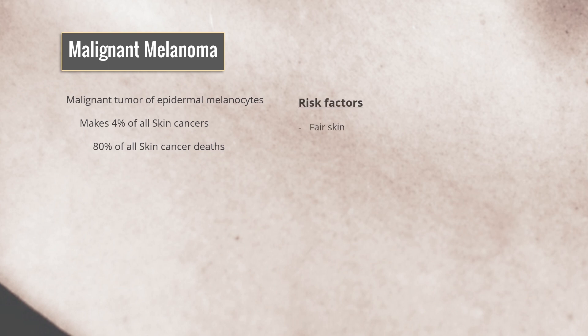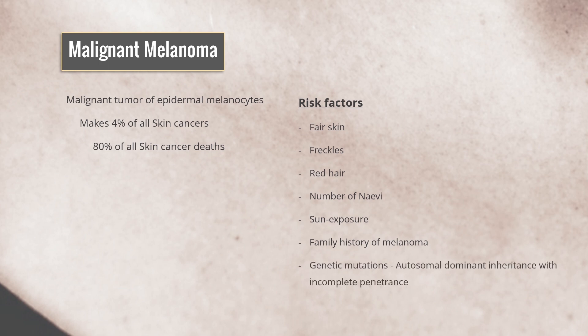Risk factors for melanoma include the following: incidence is high in fair-skinned people. Other risk factors include freckles, red hair, number of nevi, and short periods of intensive sunlight exposure during early age. A family history of melanoma increases the risk, but a strong family history is unusual. Rarely, due to mutations in certain genes, autosomal dominant inheritance of melanoma with incomplete penetrance can occur.